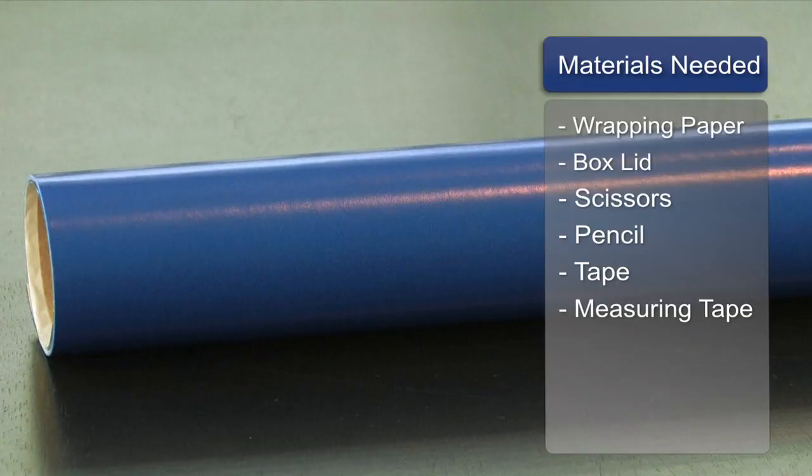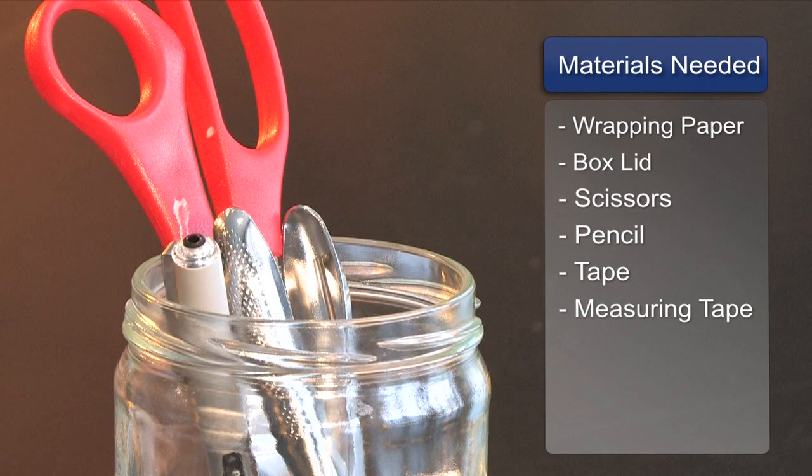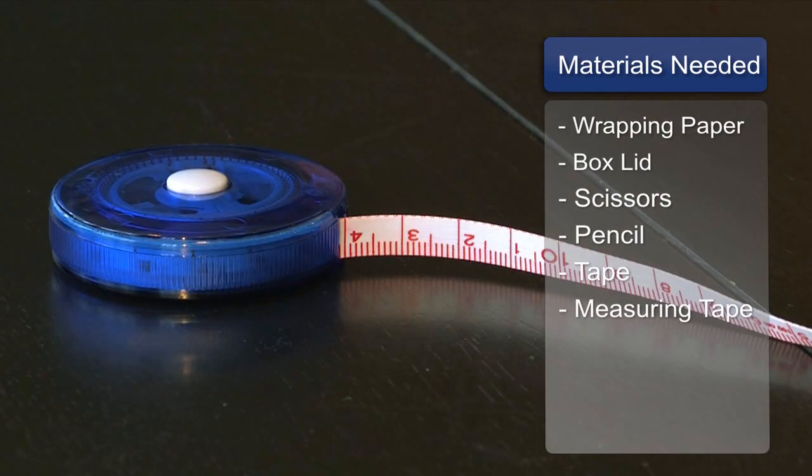The items you need for this project: wrapping paper, your box lid, scissors, a pencil, tape, and a measuring tape.